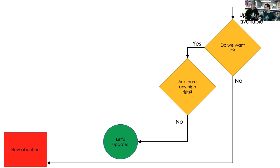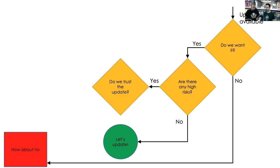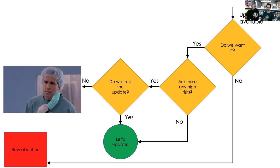I'll update my Netflix app on my phone without thinking, because even if it's broken I'll just go to YouTube. Now, if there are high risks, the question is: do we trust that this update will go smoothly? If we trust the update, no problem. Maybe Mac OS five years ago — you'd just take the new version, it would work. But not today. And the reason why we don't trust software anymore, even software we used to trust — the answer is complexity.